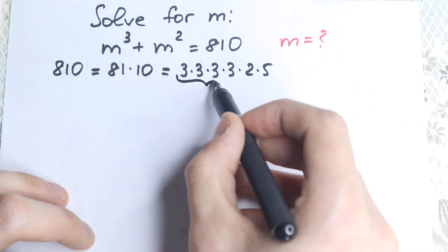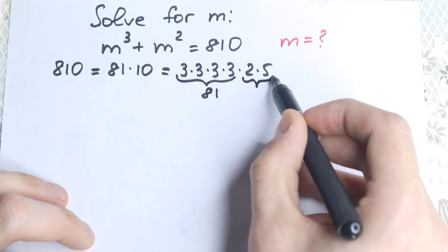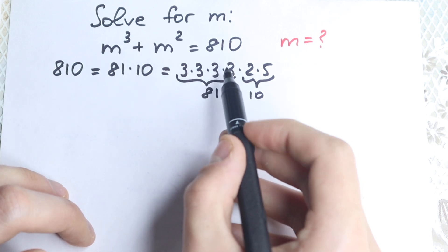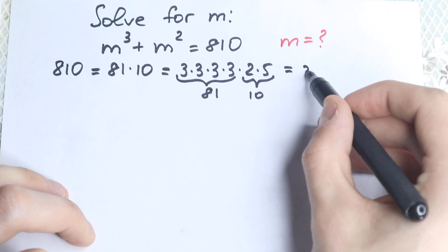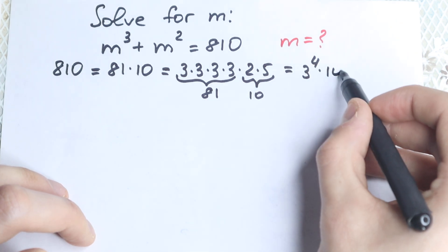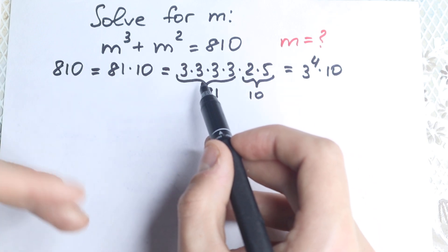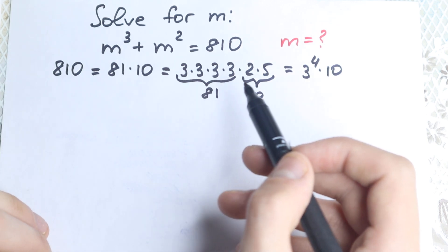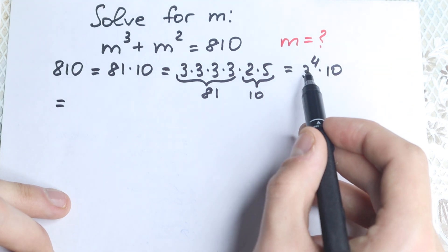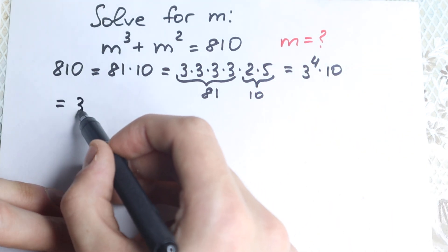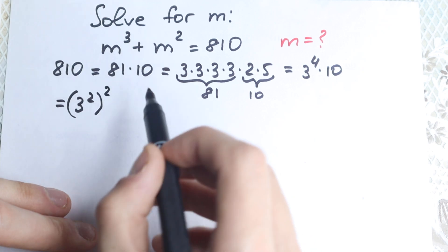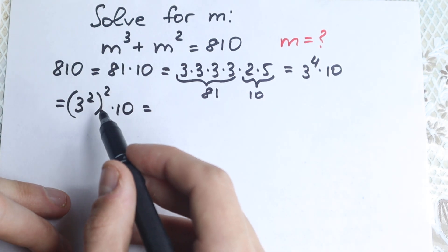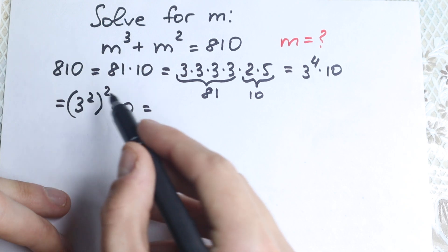This 81 right here and this 10 right here — what do we do next? This 81 can be written not just as a product 3 times 3 times 3, but as a power: 3 to the fourth power, times 2 times 5 equals 10. Now I see that 3 times 3 equals 9, and 3 to the fourth power can be written as 3 squared, squared — so 9 squared — times 10.